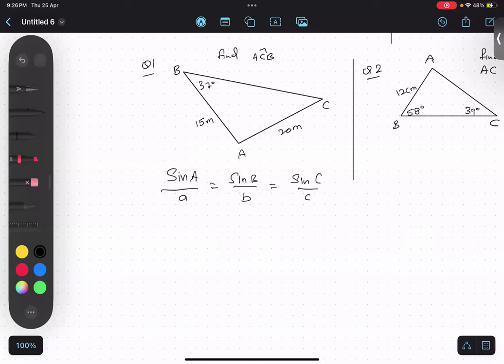So sin A over a. Over here the angle is angle ACB, so basically we need to find this angle. We don't have a and A both, so we will delete this part.